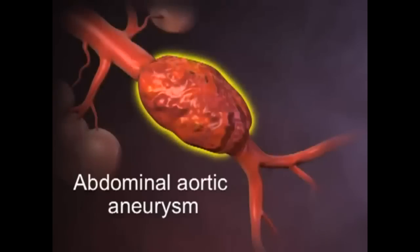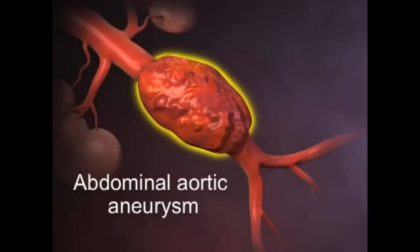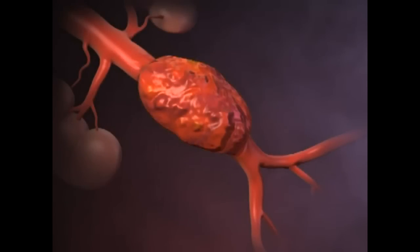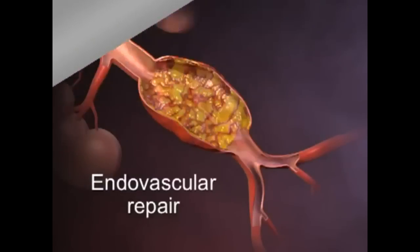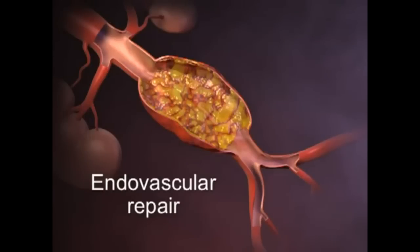The traditional approach to abdominal aortic aneurysm repair has been an open surgical procedure. Endovascular repair using an endovascular stent graft is a more recently developed approach.